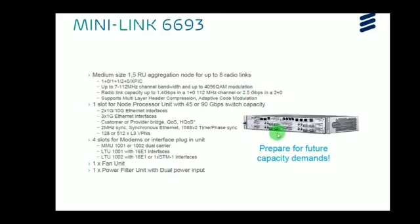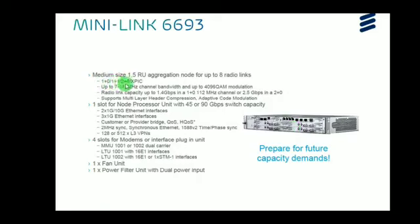The next unit is Minilink 66693, which is a medium aggregation node — specifically a 1.5 RU aggregation node supporting up to 8 radio links. It has 4 MMU slots, each supporting 2 radio links, giving a total of 8 radio links. It supports 1+0, 1+1, 2+0, and XP configurations, with channel bandwidth of 7 to 112 MHz and up to 4096 QAM modulation. It provides radio link capacity up to 1.4 Gbps in 1+0 configuration or 2.5 Gbps in 2+0. It also supports multi-layer header compression and adaptive code modulation.